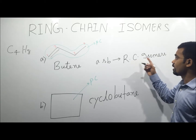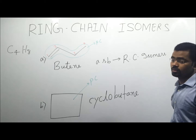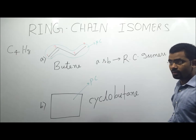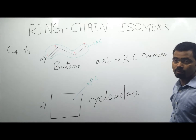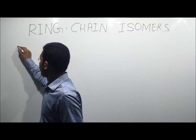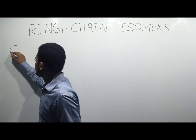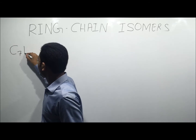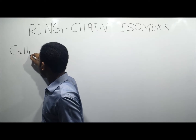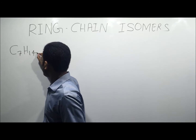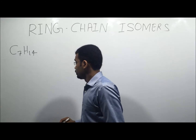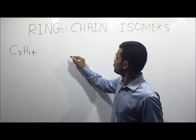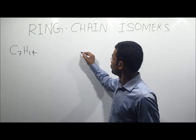Ring chain isomers. Let us see another example. The molecular formula is C7H14. We will draw some structures for C7H14.